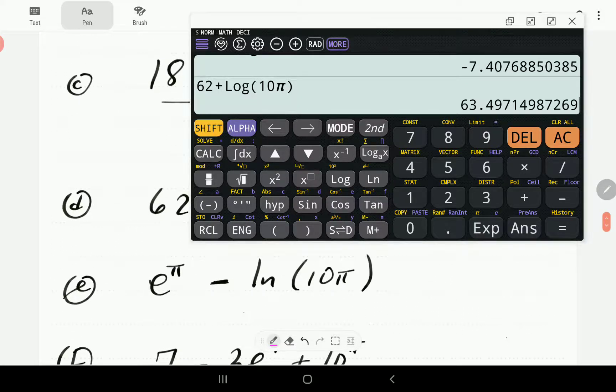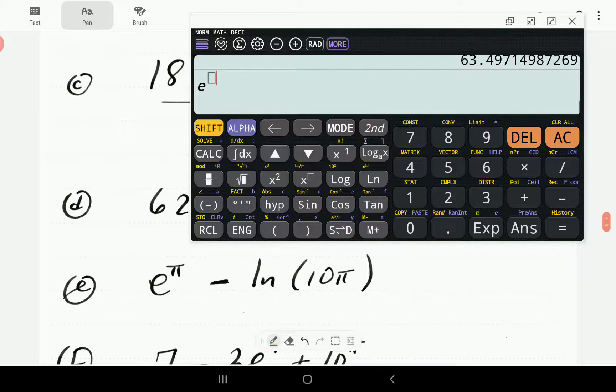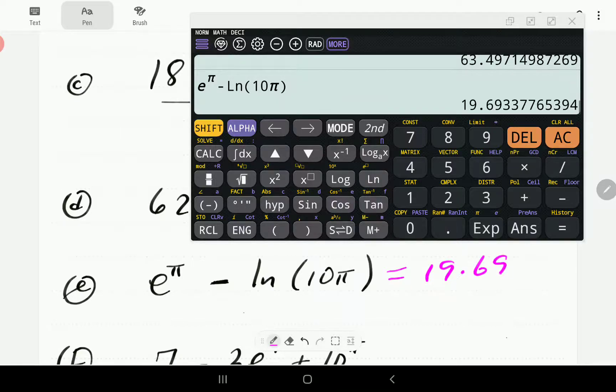In the next one, we've got e raised to the power of pi, minus ln of 10 pi. And the value is 19.69.